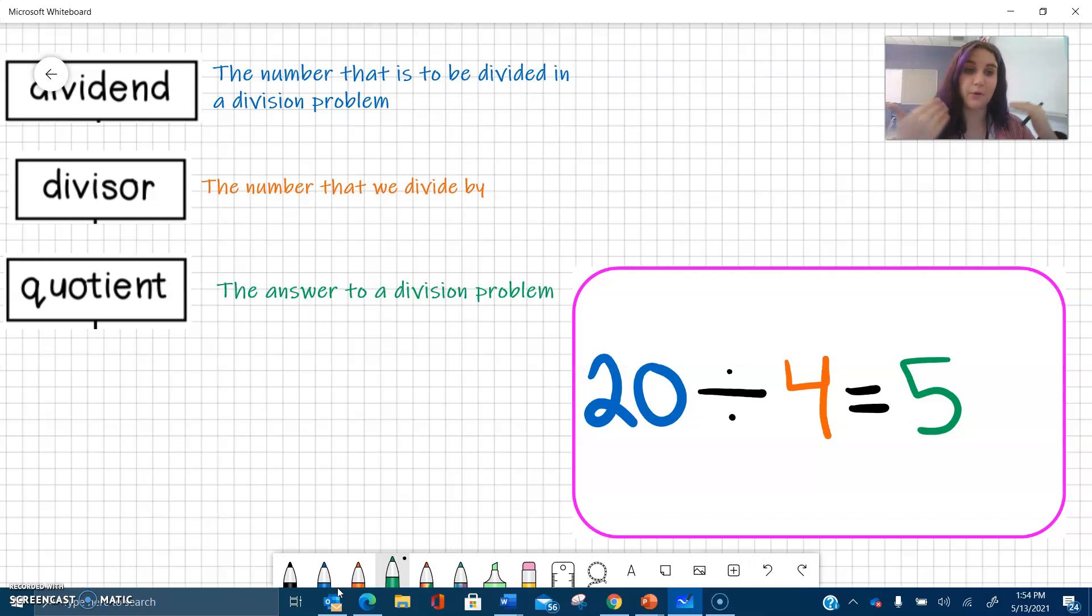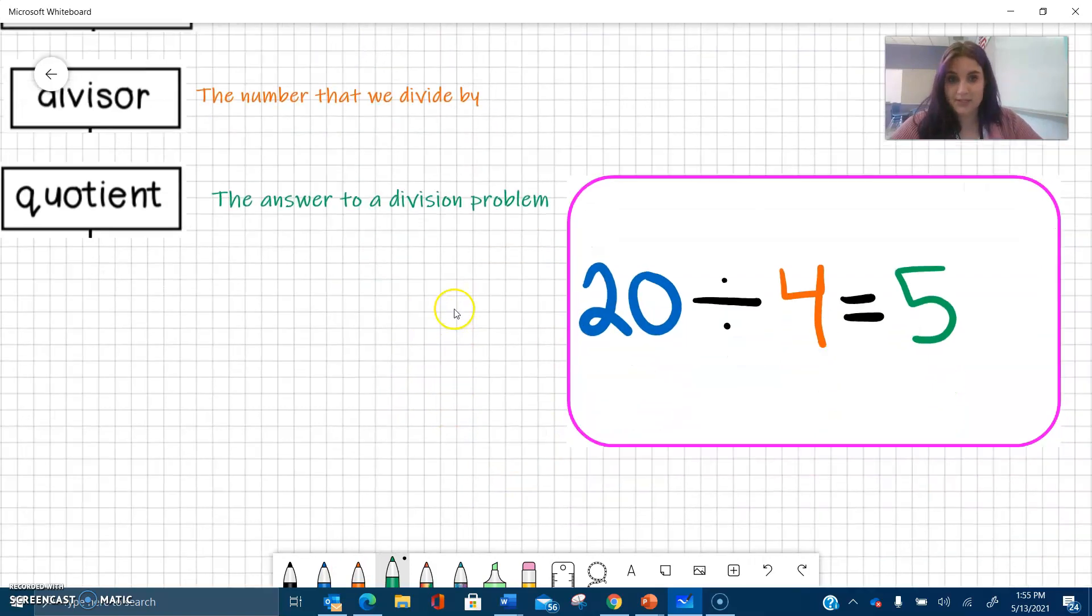If you divide 20 into four groups, there's five in each group. That is one way that we write division. There are some other ways as well.